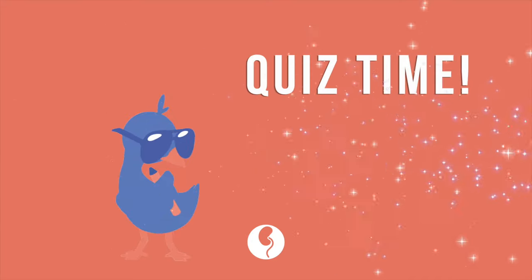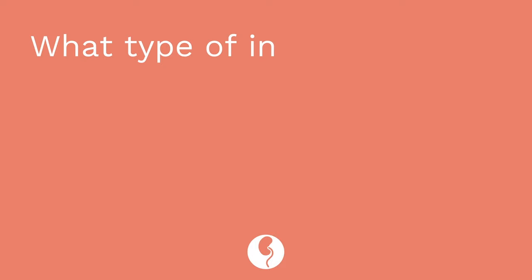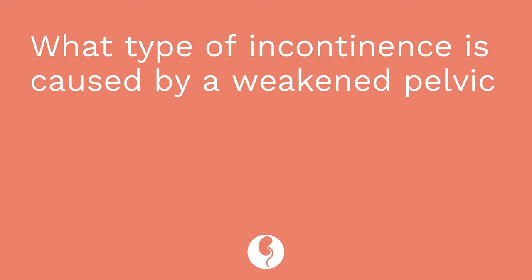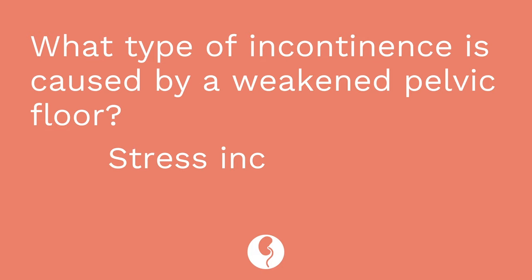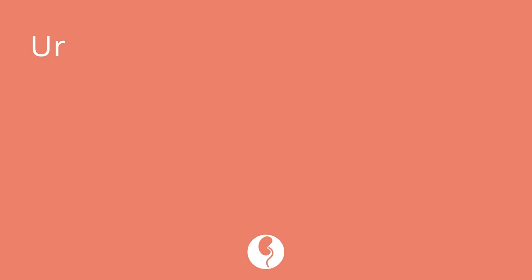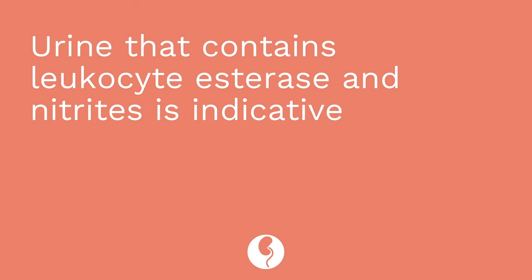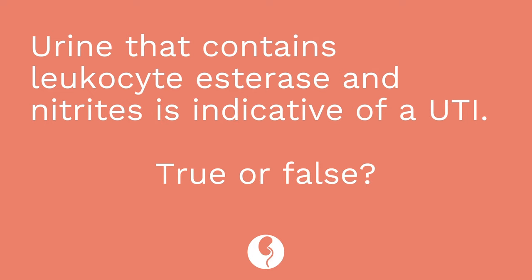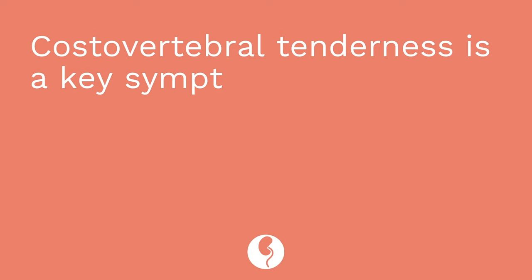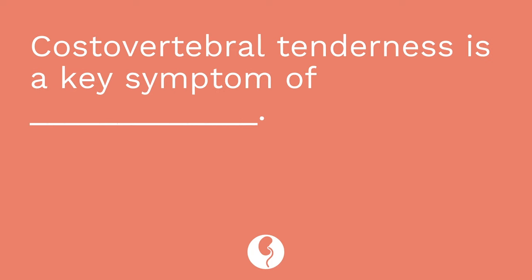It's time for a quiz — three questions. First: what type of incontinence is caused by a weakened pelvic floor? The answer is stress incontinence. Question two: urine that contains leukocyte esterase and nitrites is indicative of a UTI — true or false? The answer is true. Question three: costovertebral tenderness is a key symptom of blank. The answer is pyelonephritis.